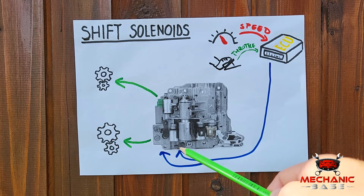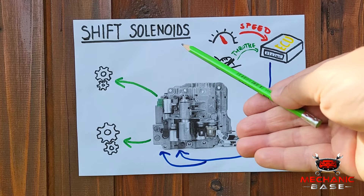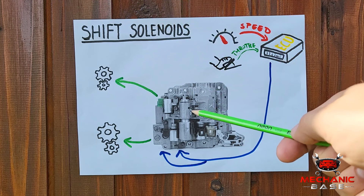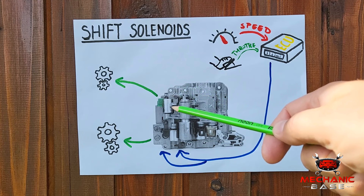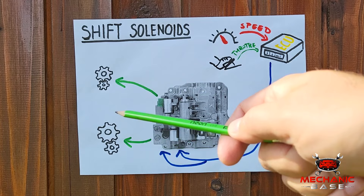Shift solenoids are basically electromagnetic valves that open and close to control the flow of transmission fluid inside the gearbox. It is this fluid, which is under high pressure, that goes into different parts of the transmission and engages or disengages different sets of gears.